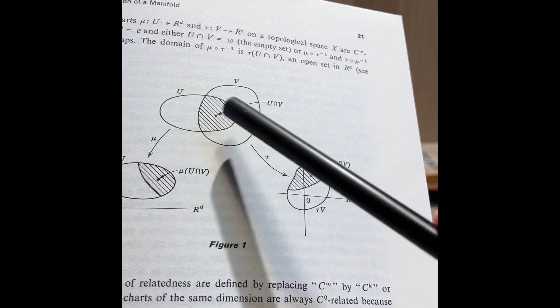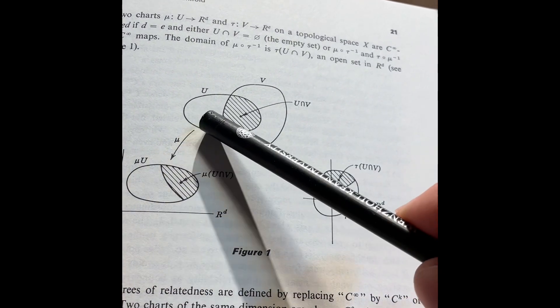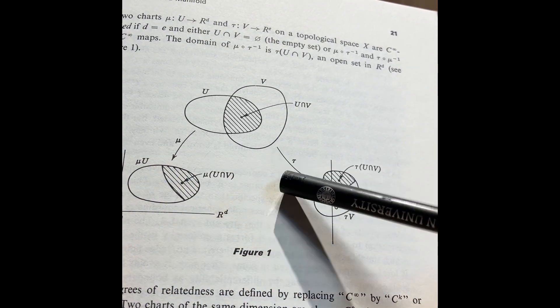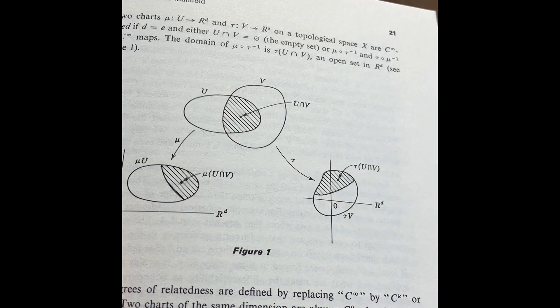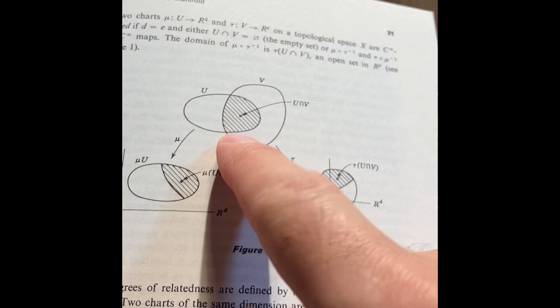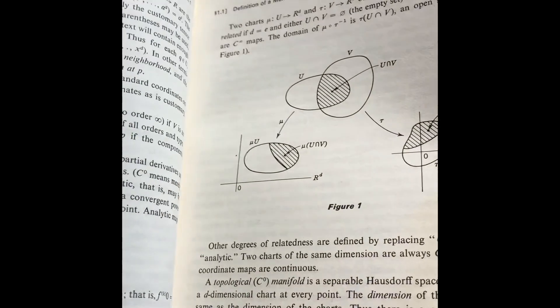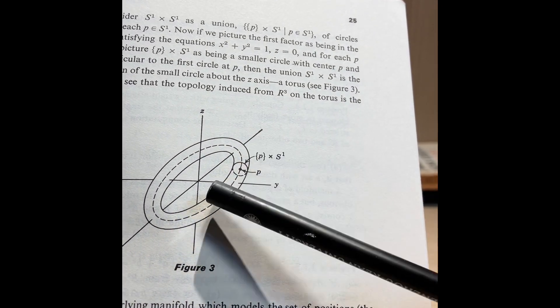On the intersection of these two patches, what you have is actually a transition function, which is computed explicitly given these charts. These charts, Mu and Tau, they define what we call transition functions between the images of these patches in R^m, in R^d. Examples of a manifold here. And you have the torus, as well, done there.